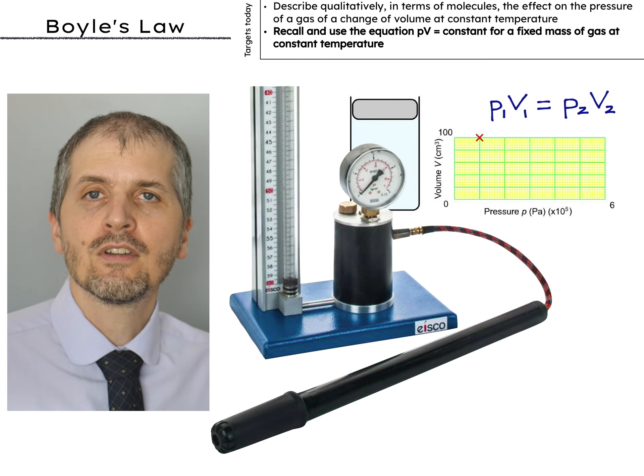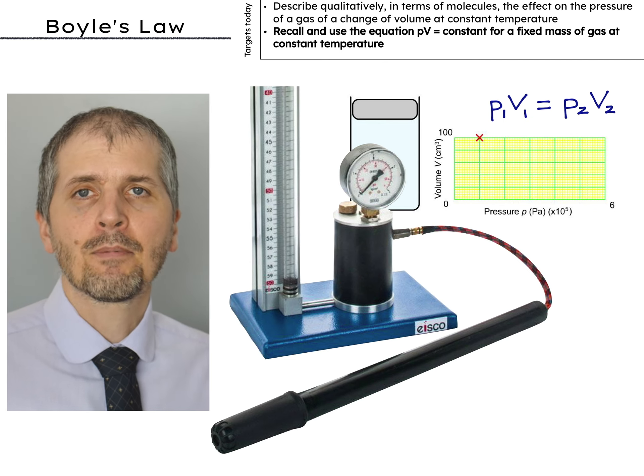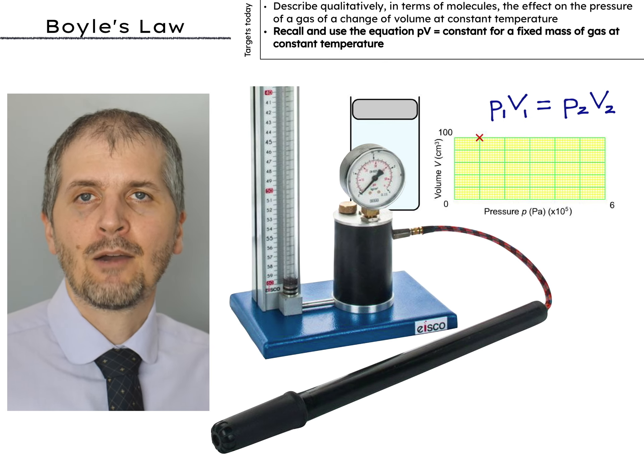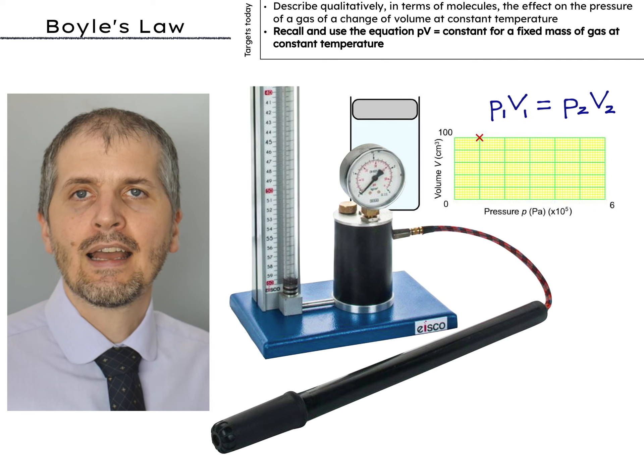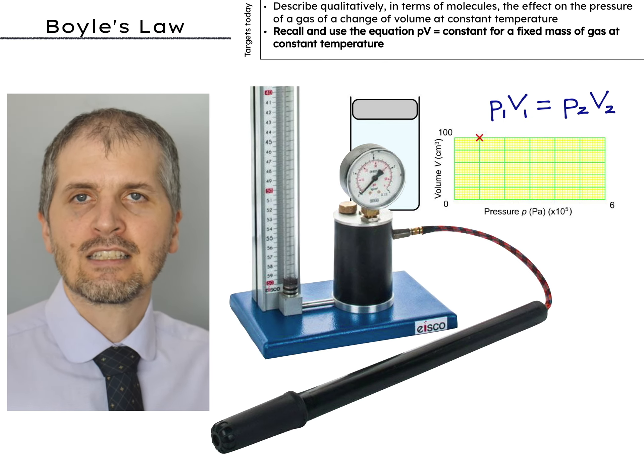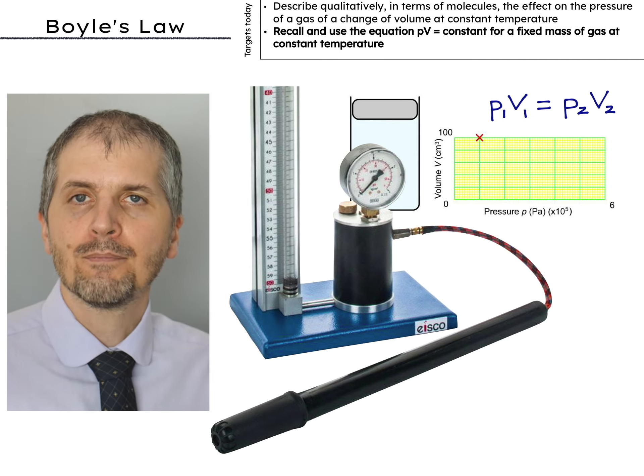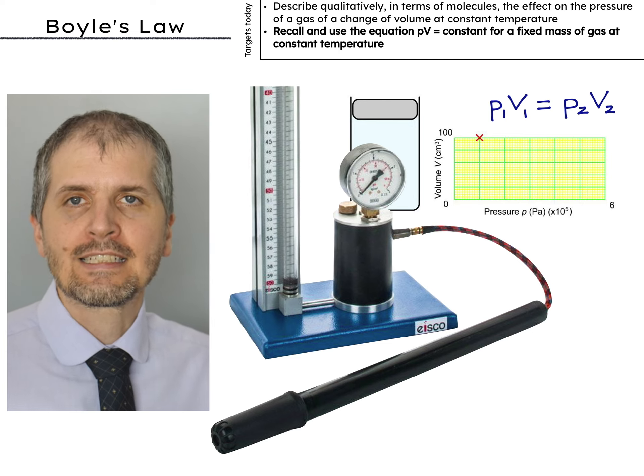Another example you might be more familiar with though are things like crisp packets. If you go on an aeroplane and you take your crisp packet up with you, don't open it yet, when you get up to a higher altitude you'll notice that the crisp packet has kind of blown up to a big size. Again that is due to the effects that are observed under Boyle's law. So let's have a look at it.